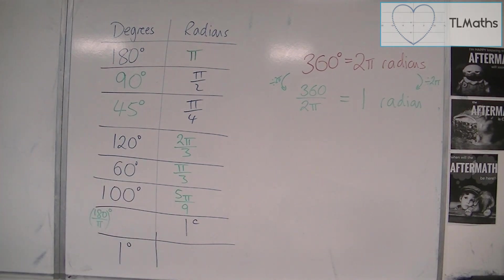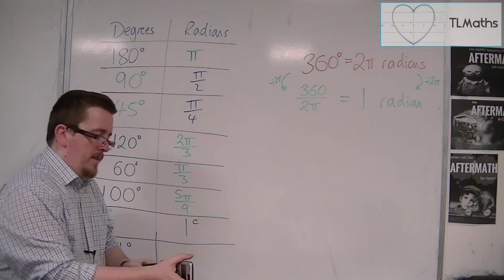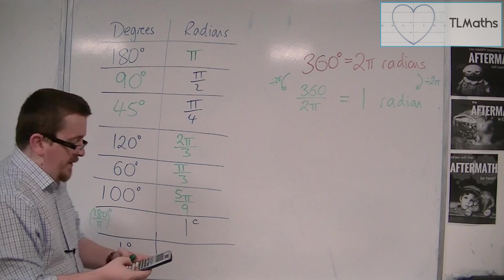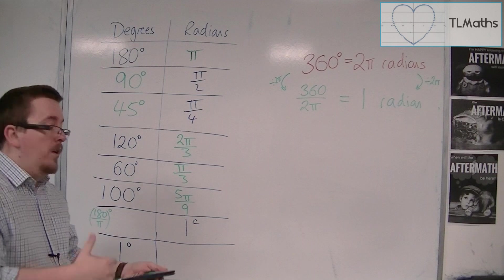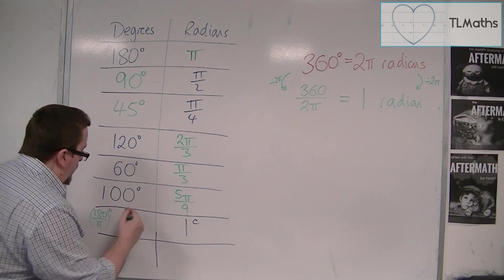But, if I... I should have had the calculator already. If we check it on a calculator, 180 divided by pi, and that gets us 57.3 degrees to one decimal place.